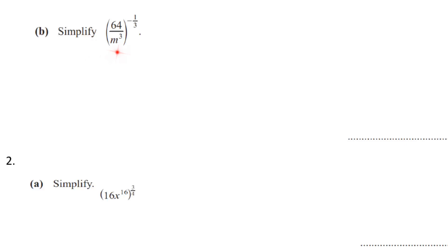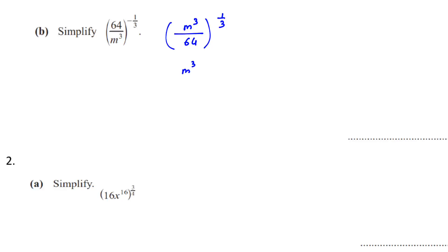In part B, we have been asked to simplify 64 over m cubed, bracket to the power of negative 1 over 3. Whenever you have a negative power, you want to make it positive. Whatever is inside the bracket, we flip it over — the denominator becomes the numerator and the numerator becomes the denominator. So we can write it as m cubed over 64, bracket to the power of 1 over 3.